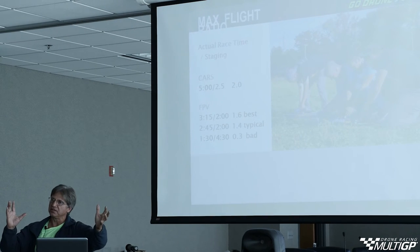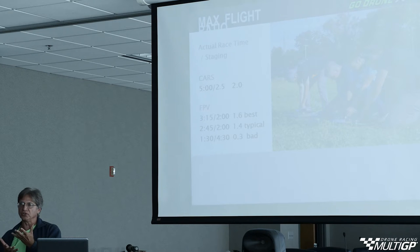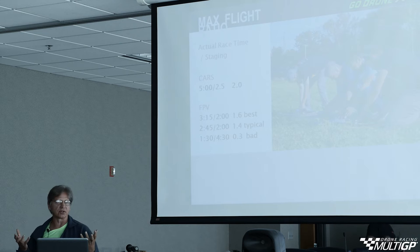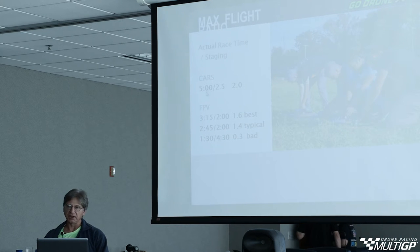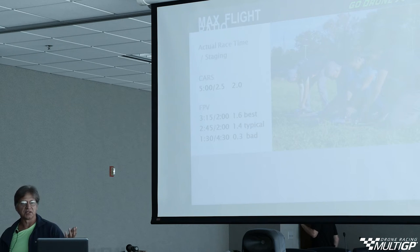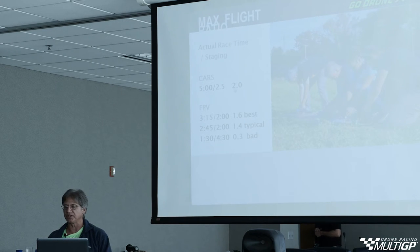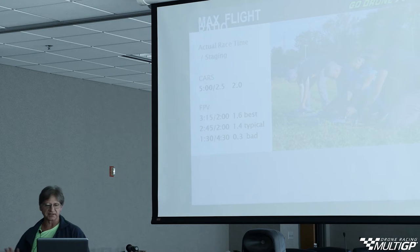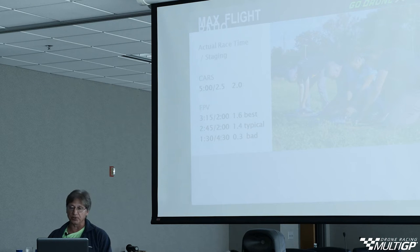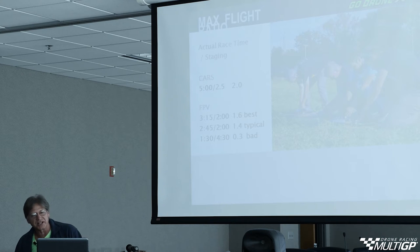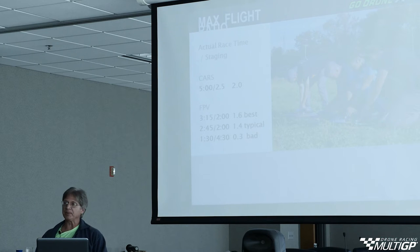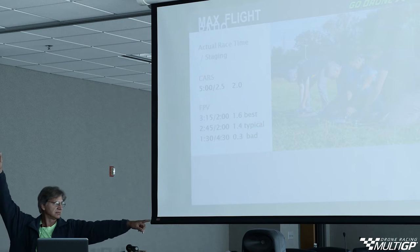Divide those two and that's how much entertainment value you're putting on for a crowd. For example, a Formula One race is about 90 minutes of continuous racing. RC cars run around five minutes with about two and a half minutes turnover — that gives a ratio of two. For FPV, if you're running five lappers at 20 seconds each, that's a minute and 30 seconds of flight time. With bad throughput and five-minute turnovers, your ratio is 0.3. Nobody wants to watch that.